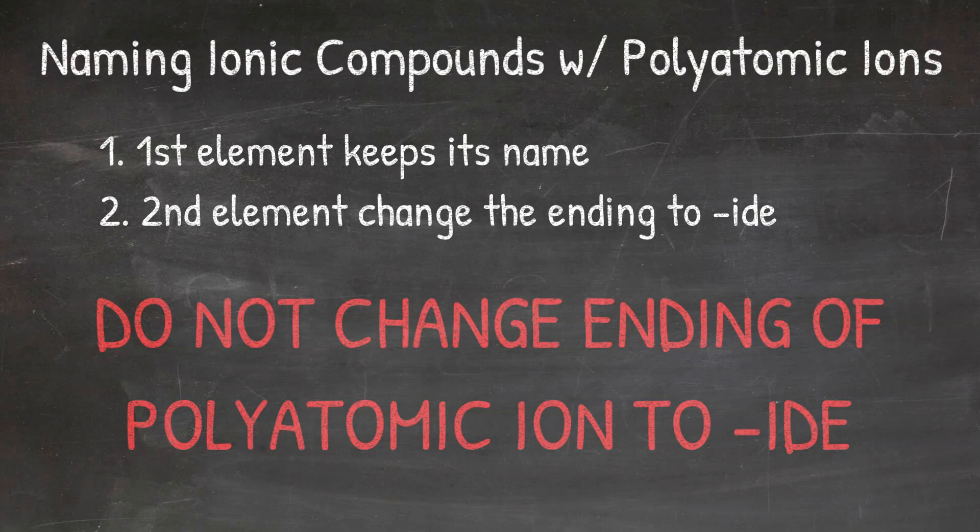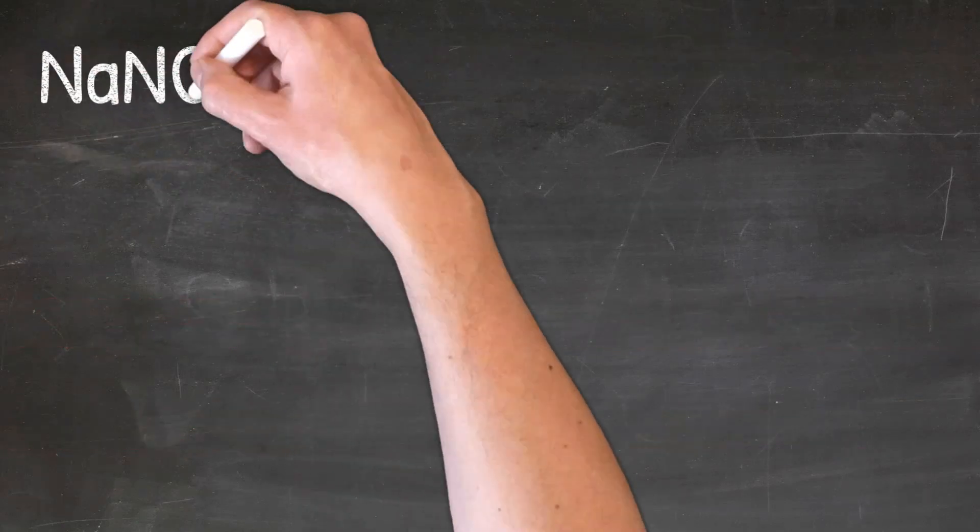Now that we know what to do with the polyatomic ion, let's look at a few examples. In our first example, we'll look at NaNO3.